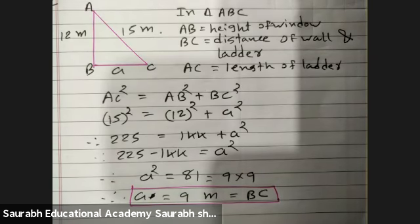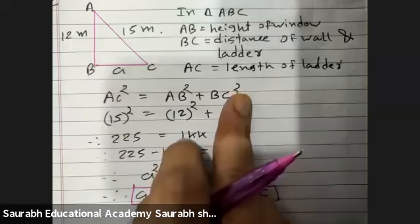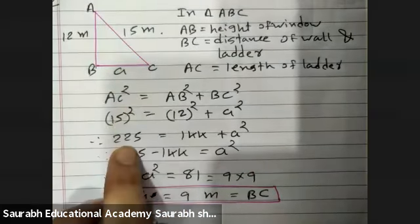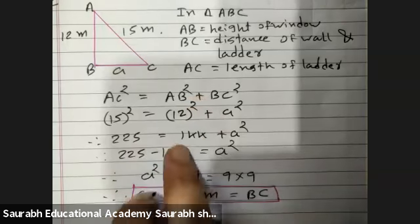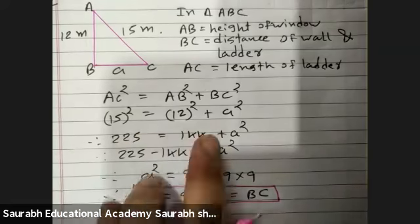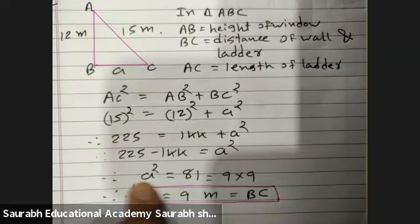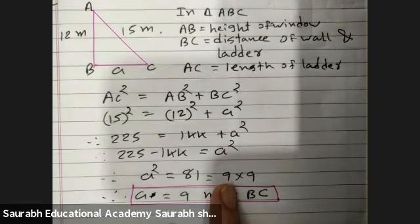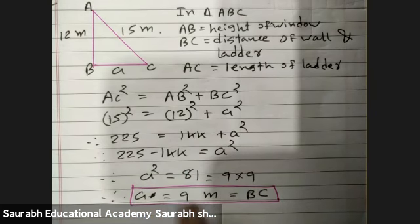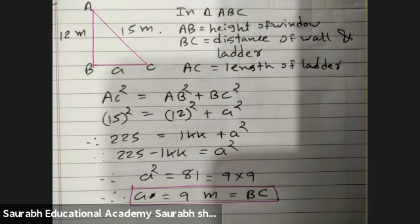AC square equals AB square plus BC square. 15 square is 225, 12 square is 144. So A square equals 225 minus 144 equals 81. 81 is 9 times 9, so A equals 9 meters. BC equals 9 meters.